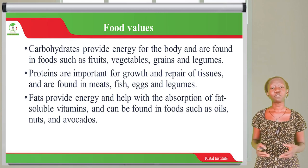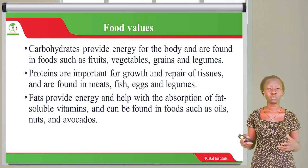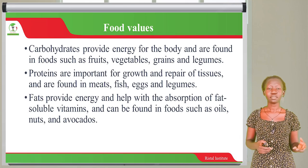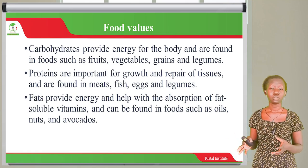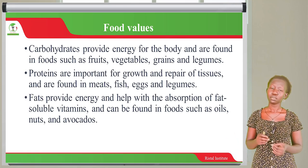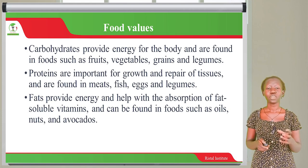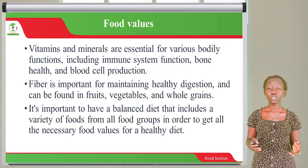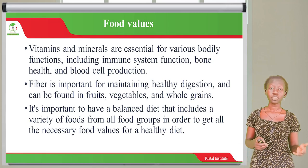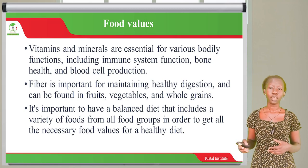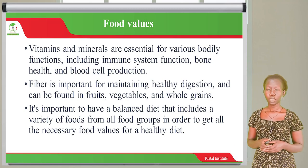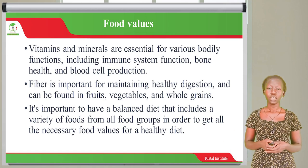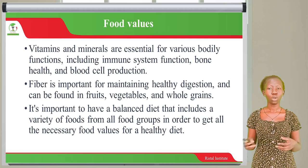Fats provide energy and help with the absorption of fat-soluble vitamins. Fats can be found in oils, nuts, avocados and other food items. Vitamins and minerals are essential for various bodily functions — for example, immune system function, bone health and blood cell production. And fiber is important for maintaining healthy digestion and can also be found in vegetables and whole grains.